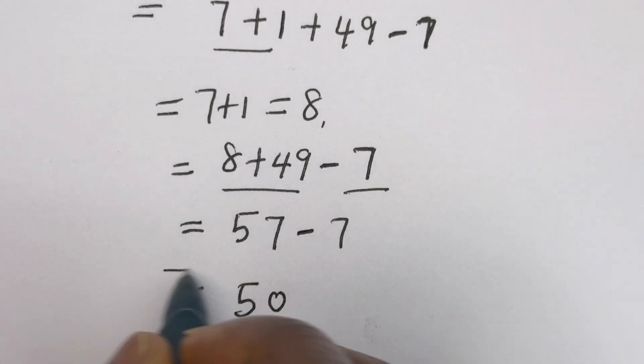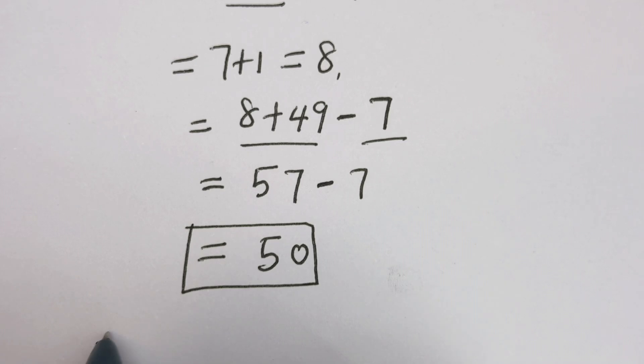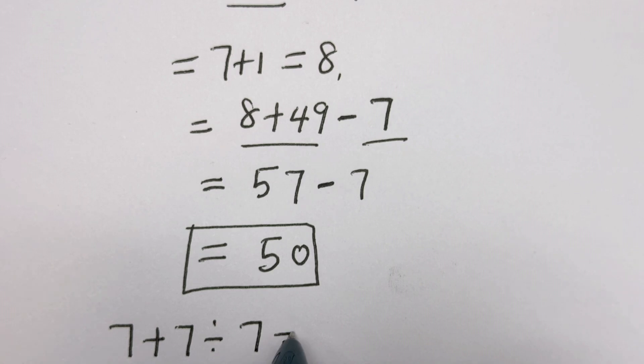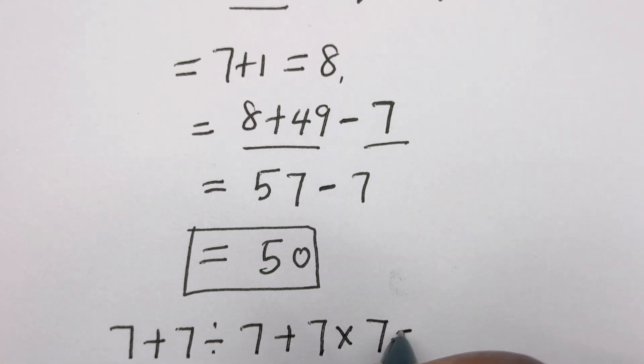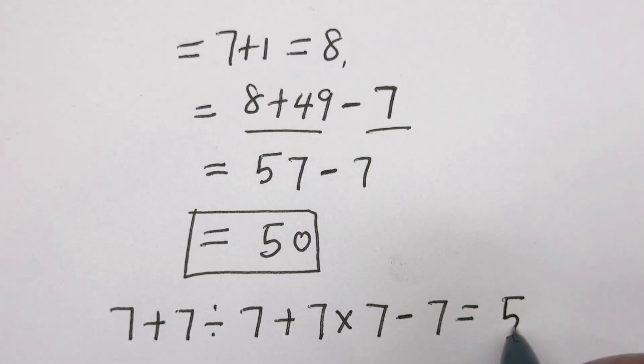This is the final answer. Therefore, 7 + 7 ÷ 7 + 7 × 7 - 7 = 50.